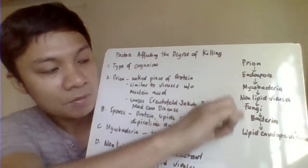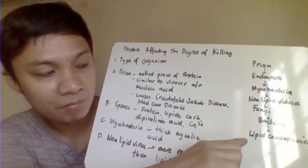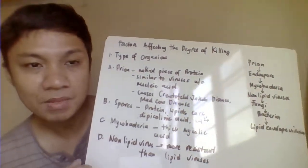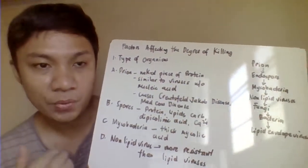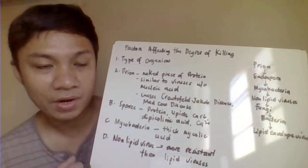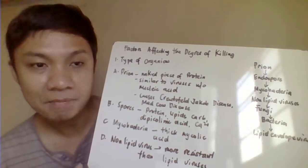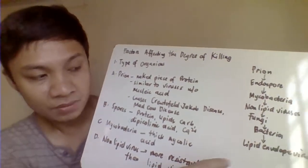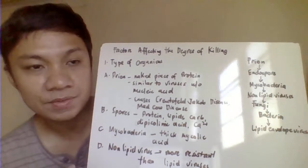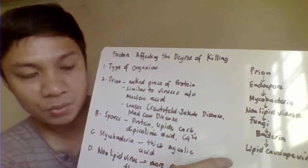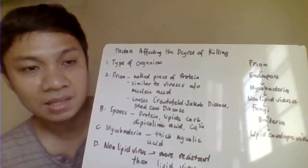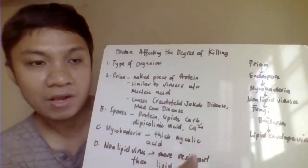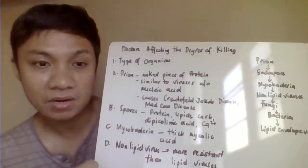To summarize the resistance hierarchy: the most resistant organisms are the hardest to kill, while the most susceptible are the easiest. The most susceptible are the lipid-enveloped viruses, which are most prone to the killing process.